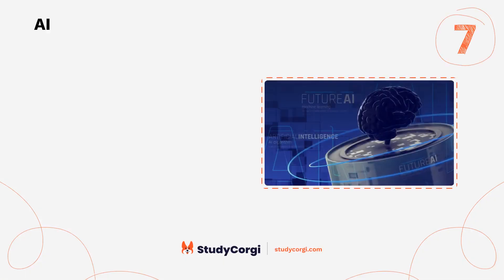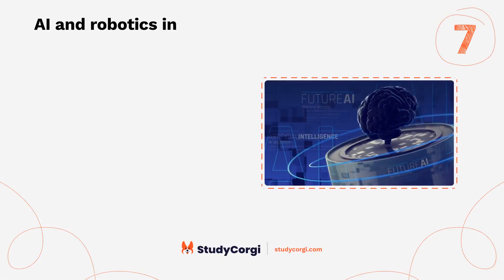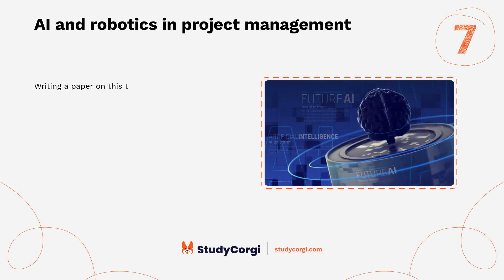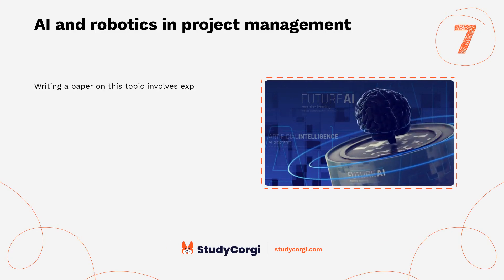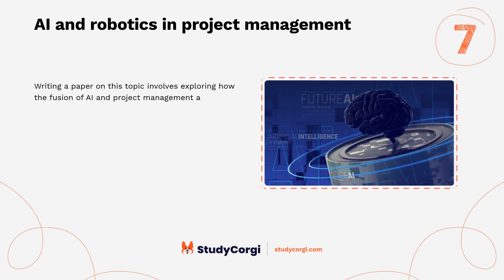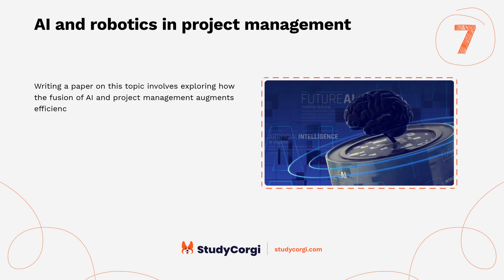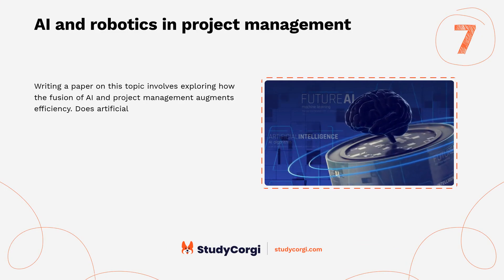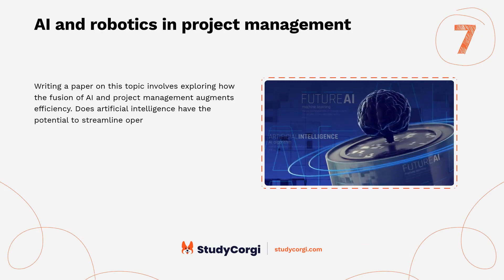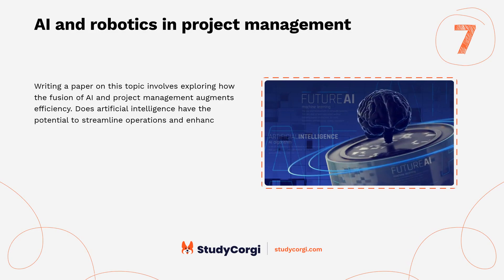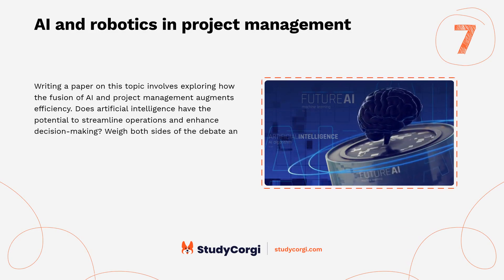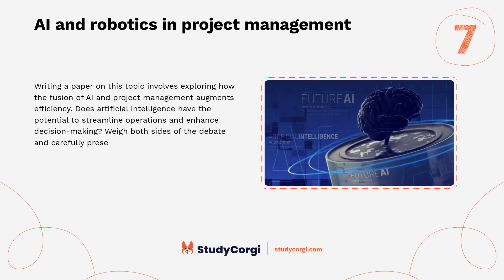AI and Robotics in Project Management. Writing a paper on this topic involves exploring how the fusion of AI and project management augments efficiency. Does artificial intelligence have the potential to streamline operations and enhance decision-making? Weigh both sides of the debate and carefully present your arguments.